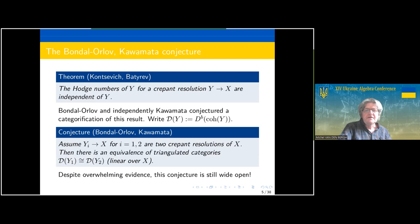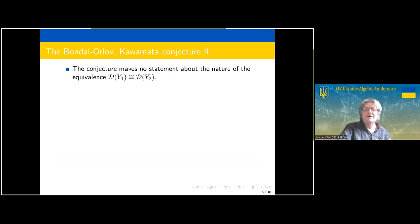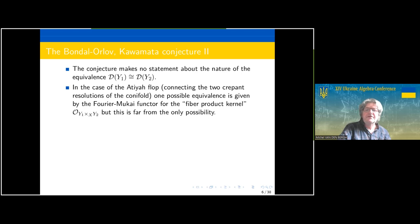There is a categorification of this result proposed by Bondal and Orlov and independently by Kapranov, which says that if we have two crepant resolutions then their derived categories are equivalent. There is overwhelming evidence that this conjecture is correct, but it is still wide open. The conjecture only asserts the existence of an equivalence, but there is a natural candidate: the fiber product kernel, obtained by taking the fiber product of two crepant resolutions and pushing forward. This works for the standard flop but is not the only equivalence — it is, however, a very canonical one.